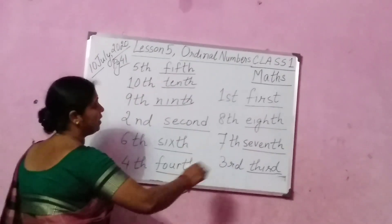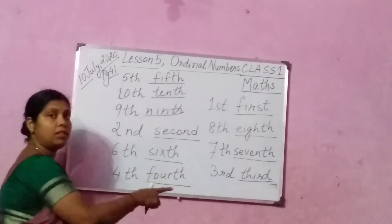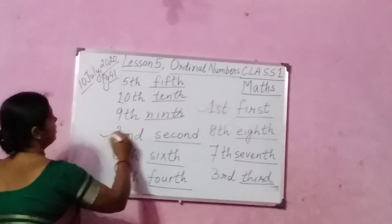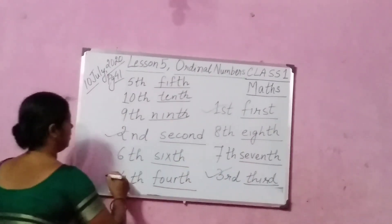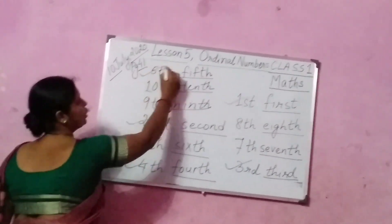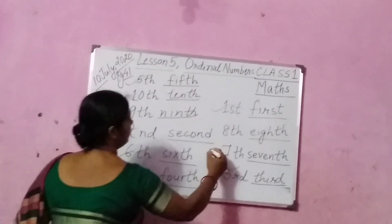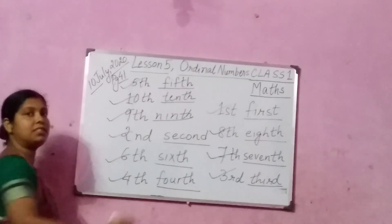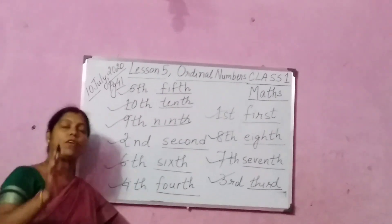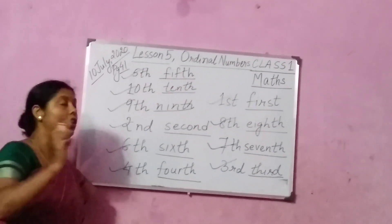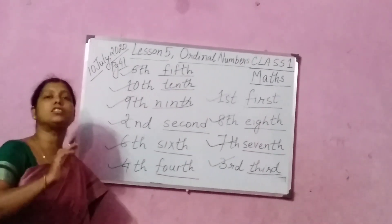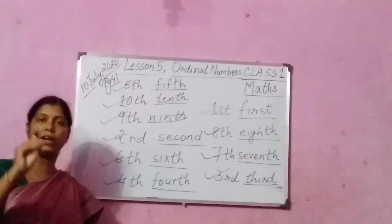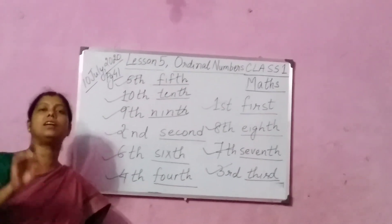So you just see, children — all 10 ordinal numbers from 1st to 10th are here. This is 1st, this is 2nd, this is 3rd, this is 4th, this is 5th, this is 6th, this is 7th, this is 8th, this is 9th, and this is 10th. All the ordinal numbers are written in the copy. Please learn the spellings.